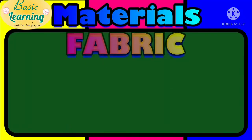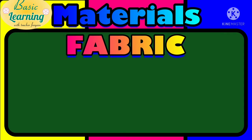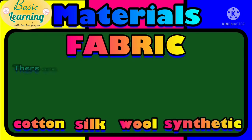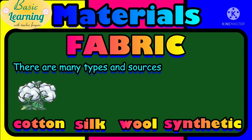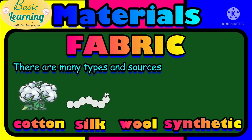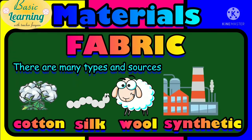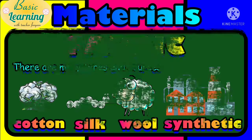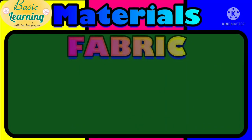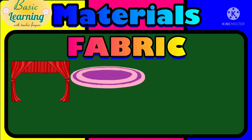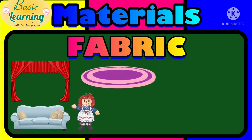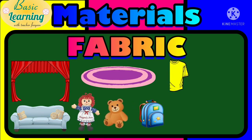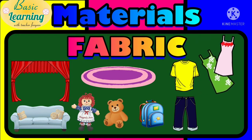The fifth type of material is fabric. Fabric can be of cotton, silk, wool, or synthetic. We get cotton from plants, silk from the silkworm, wool from the sheep's fur, and synthetic fabric is made with chemicals in factories. Fabric is used daily in things like curtains, carpets, sofas, dolls, teddy bears, bags, t-shirts, jeans, dresses, and scarves. All are made with different types of fabrics.